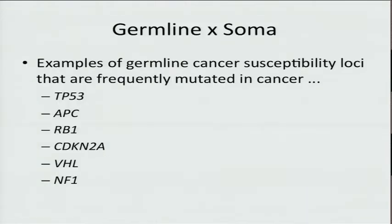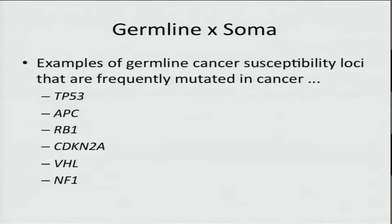In familial germline loci, there is a lot of precedence for genes that are mutated in germline families but also somatically altered in cancer. Among these are P53, APC, RB1, CDKN2A, VHL, and NF1. A lot of these are tumor suppressor genes which undergo a two-hit alteration whereby they are inactivated in the germline and then undergo a second hit in the tumor tissue to become lost and undergo loss of function.